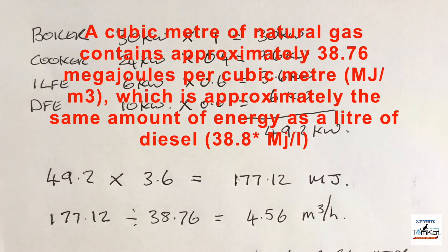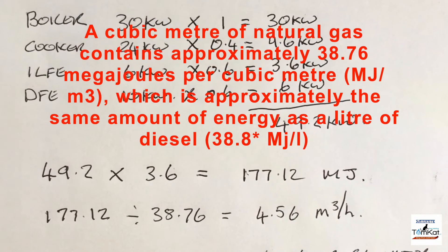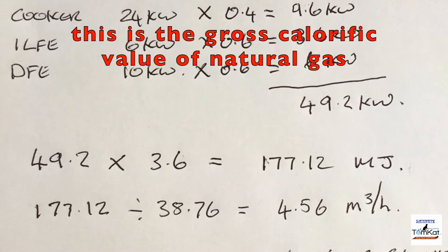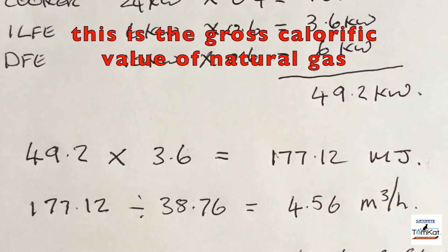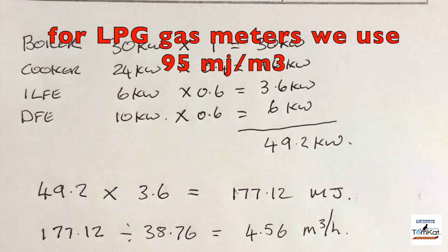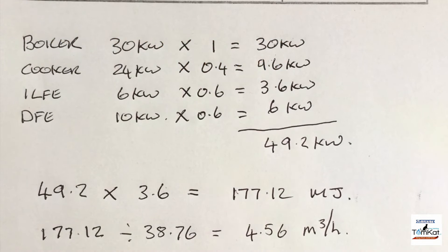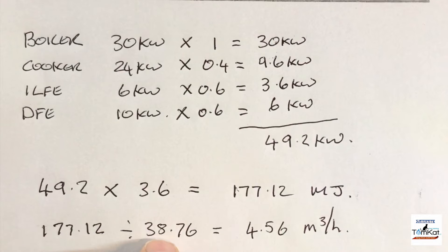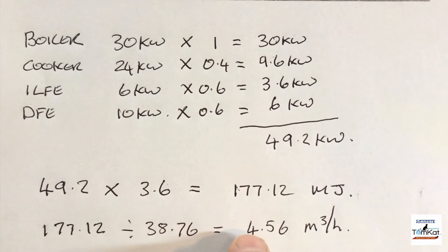Step three: divide the total number of megajoules by the calorific value of natural gas — currently 38.76 — to determine the equivalent gas flow rate in meters cubed per hour, which will determine the meter size required. So 177.12 ÷ 38.76 = 4.56 meters cubed per hour.